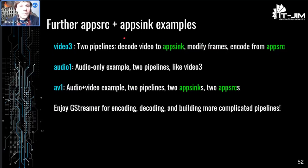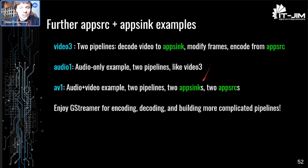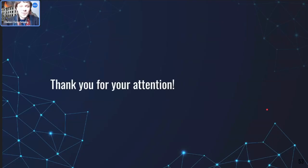In my tutorial there are more examples. Video3 introduces two pipelines: decode video to appsink, modify with OpenCV, then encode again from appsrc — a combination of video1 and video2. Audio1 does the same but for audio: two pipelines, insert audio processing in the middle. And finally the last example, AV1 — an audio and video example combining video3 and audio1. There you have two pipelines: one for decoding, one for encoding, processing raw signals in the middle, with two appsinks and two appsrcs for audio and video respectively. And we are finished. GStreamer is nice — enjoy GStreamer for your encoding, decoding, and building even more complicated pipelines. Thank you for your attention.